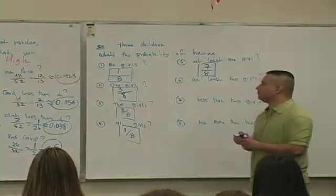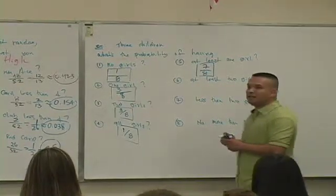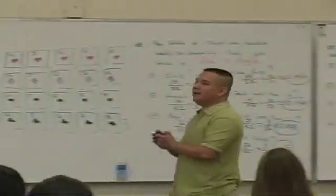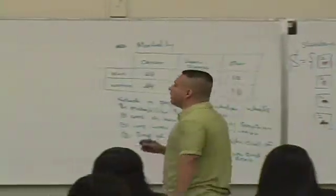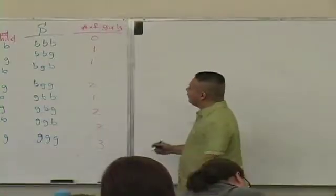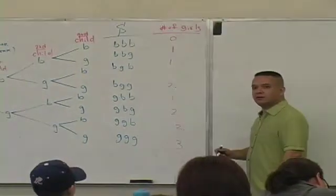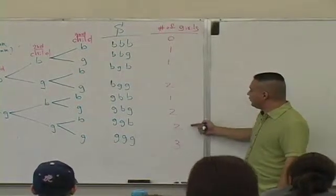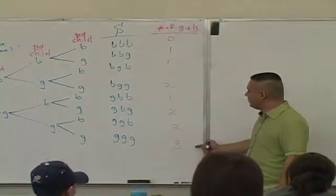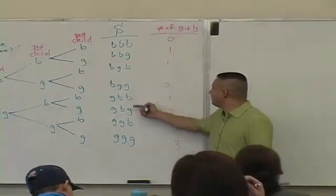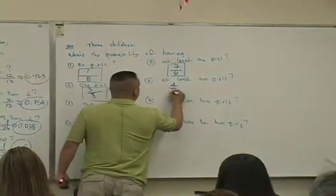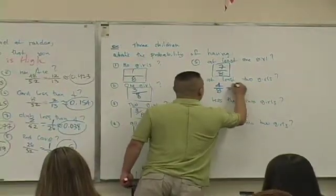At least two. What does at least two mean? Two or more. So which outcomes consist of having at least two girls? Four outcomes. Let's reduce — one half.